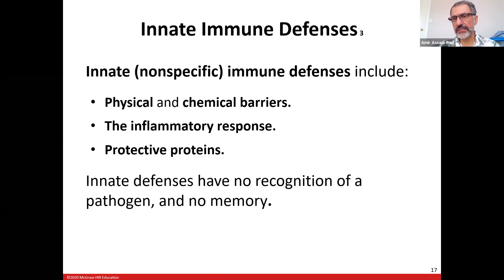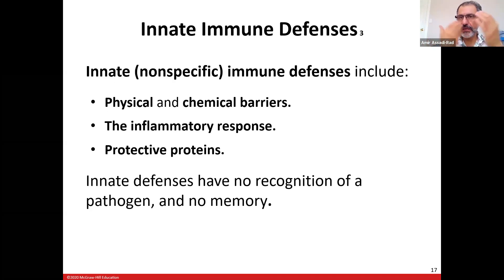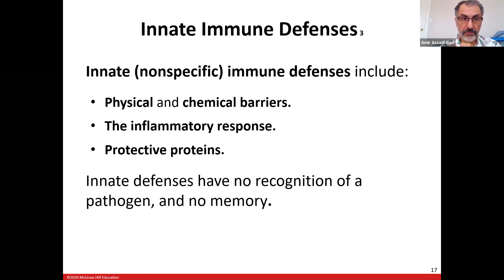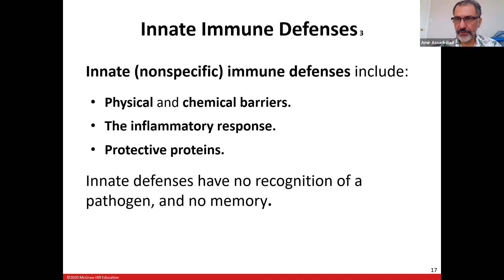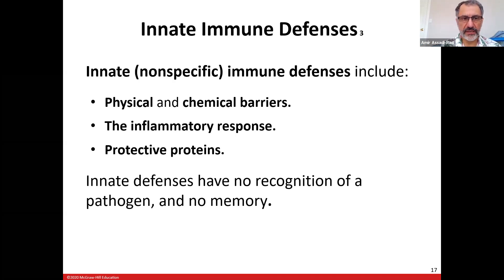Innate immunity is nonspecific — anything that comes inside your body, innate immunity will try to get hold of it. It includes physical and chemical barriers, inflammatory responses, and protective proteins — three components. It has no recognition of a specific pathogen and no memory.